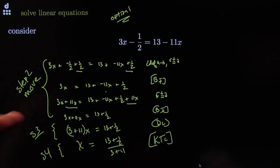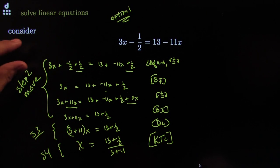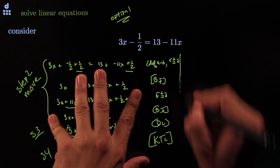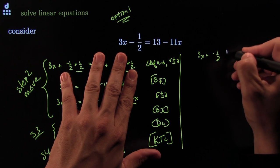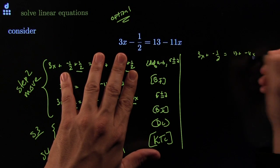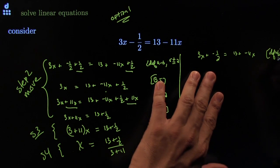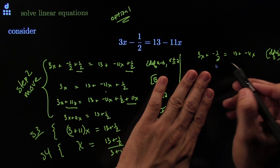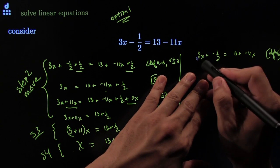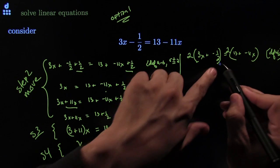Steps 2, 3, and 4 will always get you there. There's still step 1 to cover, but first let me show the optional step. If you have 3x plus negative one-half equals 13 plus negative 11x and you're not comfortable with fractions yet, you can kill them. Using the definition of a over b, I multiply the left side by 2 and the right side by 2, because 2 was the denominator. This is called multiplying both sides by something, or the cancellation law of multiplication.